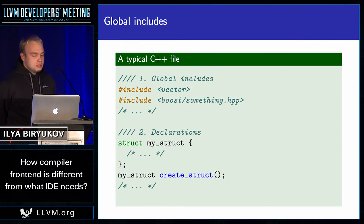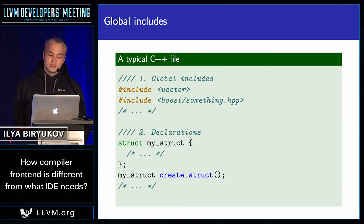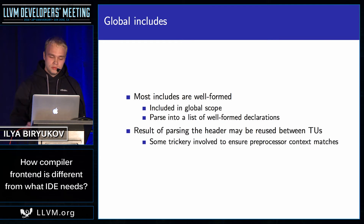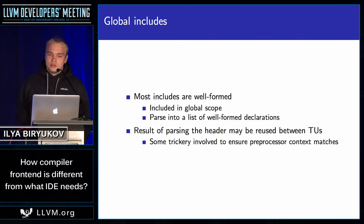Another thing that we did is we implemented an optimization for well-formed global includes — well-formed in the following sense: most includes are situated in the top-level scope and the included tokens are parsed into a bunch of well-formed declarations. So in this typical case, we will parse the header file for the first time and then reuse the result of parsing the header file — the syntax tree — between different translation units.